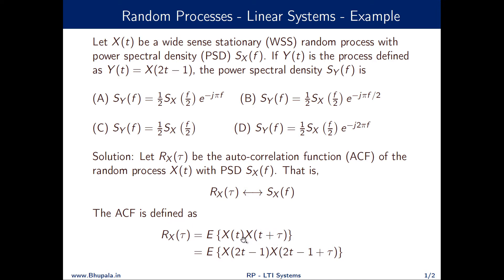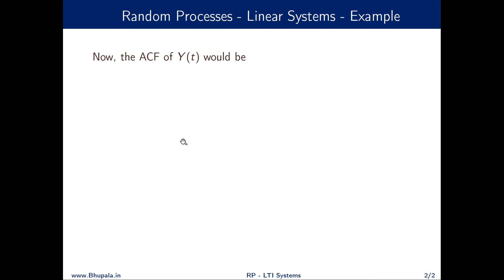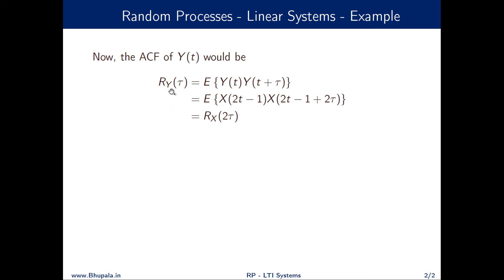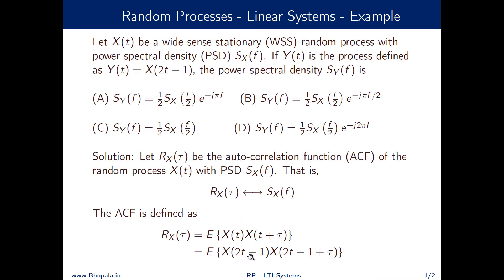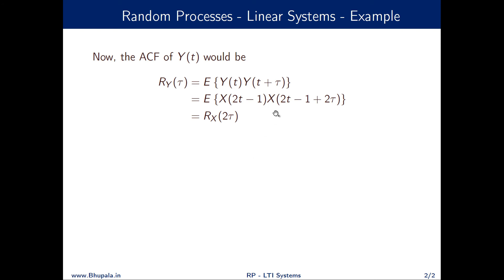If we sample at 2t - 1, we sample again at 2t - 1 + τ. The autocorrelation of Y(t) is RY(τ) = E[Y(t)·Y(t + τ)]. Substituting Y(t) = X(2t - 1), we get E[X(2t - 1)·X(2t - 1 + 2τ)]. Since E[X(2t - 1)·X(2t - 1 + τ)] = Rx(τ), it follows that E[X(2t - 1)·X(2t - 1 + 2τ)] = Rx(2τ).